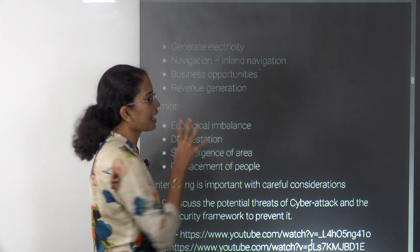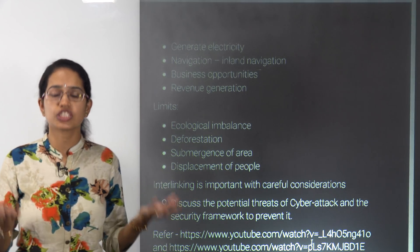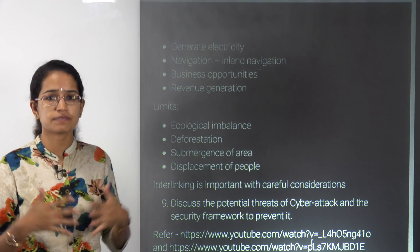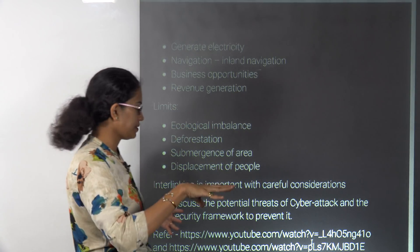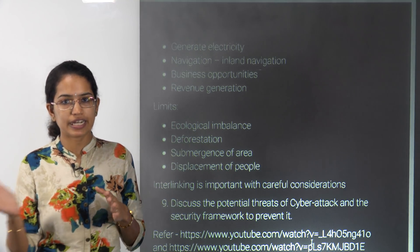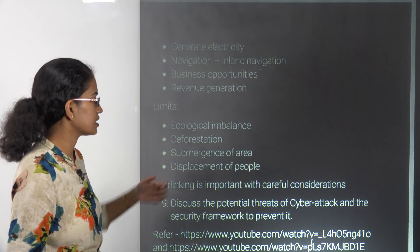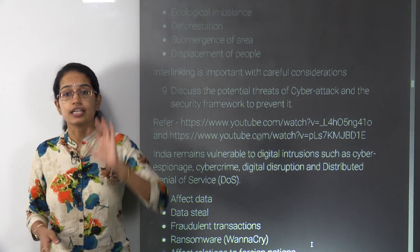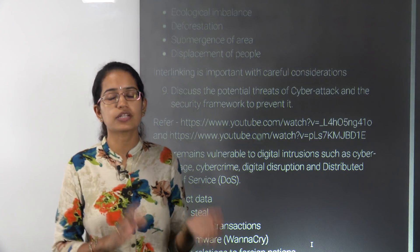However, interlinking of rivers has certain limitations. The first is ecological imbalance. Interconnecting rivers would cause displacement and rehabilitation of people, and some areas might be submerged. The cost of displacing and rehabilitating people is a very important consideration. This topic is crucial not only for GS Paper 3 but also for optional papers, especially for geography students.